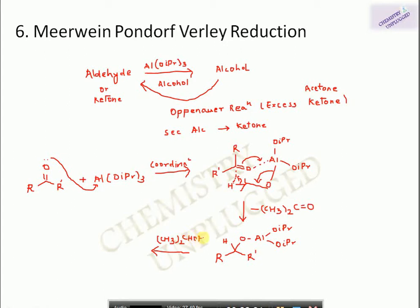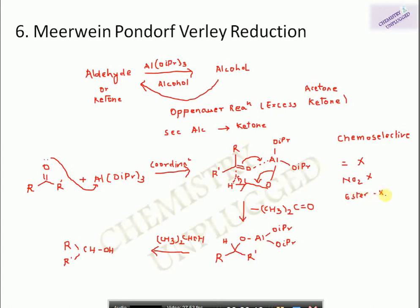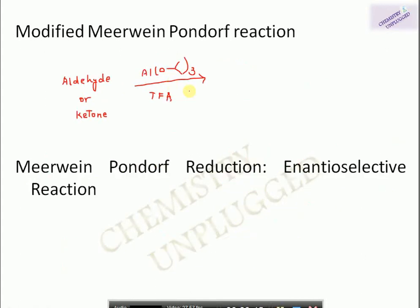In the next step, isopropanol is used: the H of isopropanol attaches to the oxygen atom and we obtain a secondary alcohol as product while aluminium isopropoxide is regenerated. This reaction is highly chemoselective — it does not affect double bonds, nitro groups, esters, or other functional groups; it only reduces the carbonyl group to an alcohol.